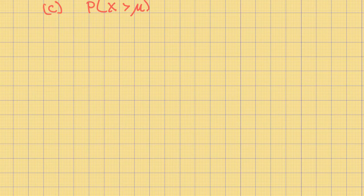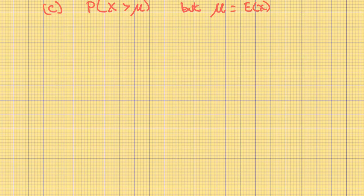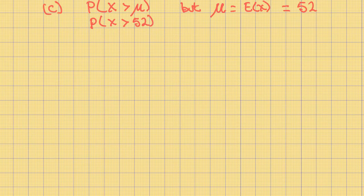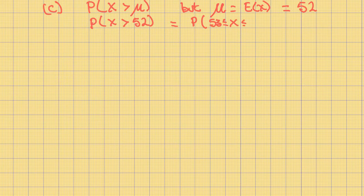And C, the probability that X is greater than mu. Remember, mu is the mean, and mu is equal to the expected value of X, which in this case is equal to 52. So we want the probability that X is greater than 52. Remember, with this sort of question, we are looking for a range of values. Because it is greater than 52, our range of values is X between 53 and 80.